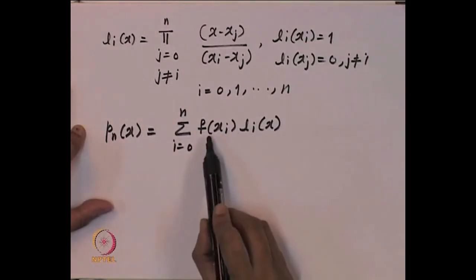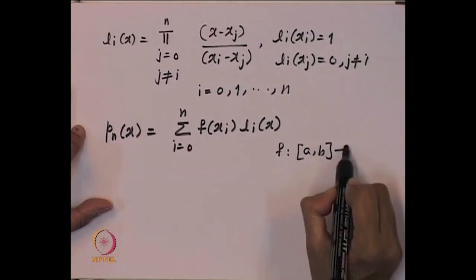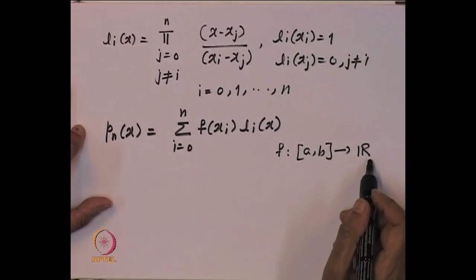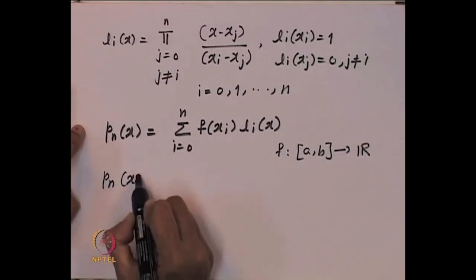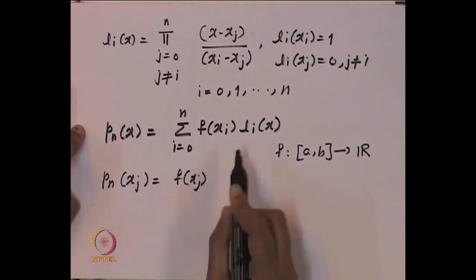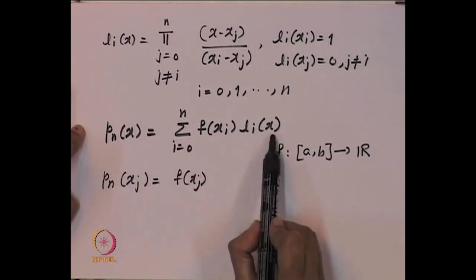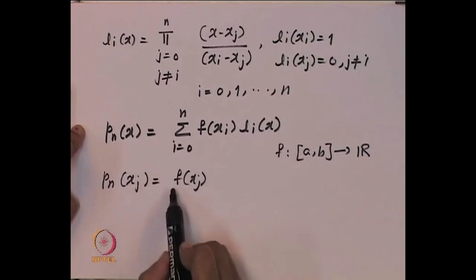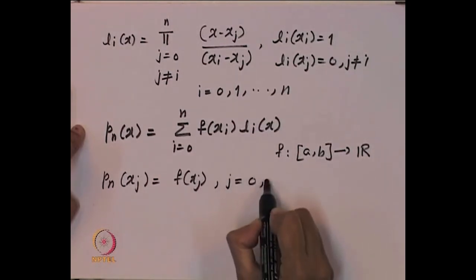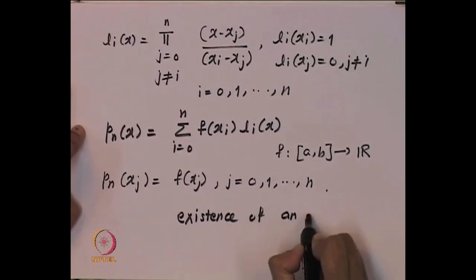Here we have L_i(x) = Π_{j=0, j≠i}^{n} (x - x_j) / (x_i - x_j). We have seen that L_i(x_i) = 1, L_i(x_j) = 0 if j ≠ i, and i goes from 0 to n, so there are n+1 Lagrange polynomials. Consider p_n(x) = Σ_{i=0}^{n} f(x_i) L_i(x). Since L_i(x_j) = 1 only when i = j and 0 otherwise, p_n(x_j) = f(x_j) for j = 0, 1, ..., n. Thus we have proved existence of an interpolating polynomial.